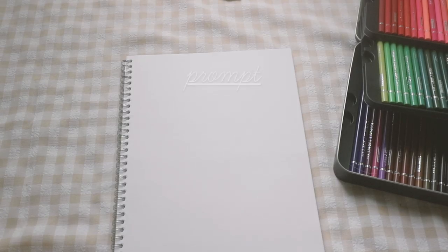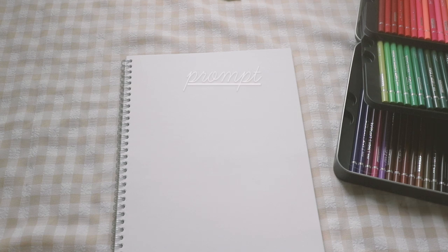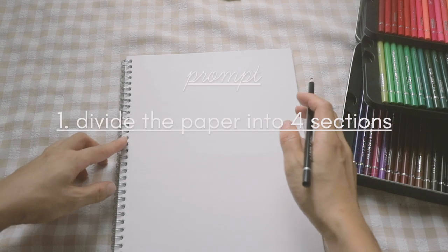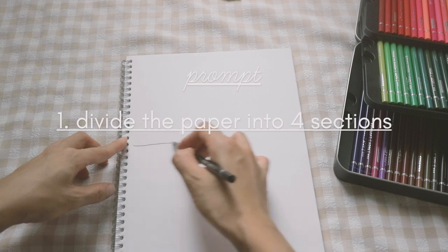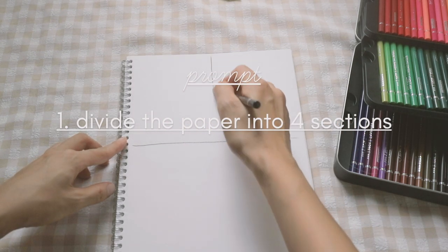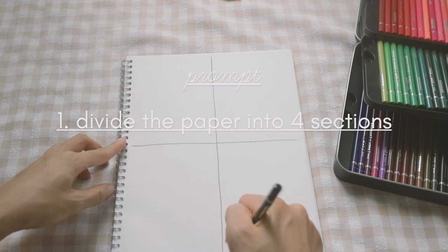First, divide the paper into four sections. I just like to put a line through the middle point of the paper vertically and horizontally.